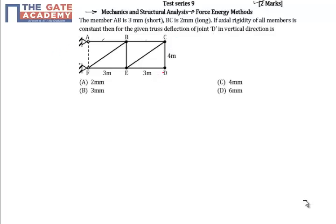Drawing the free body diagram here and applying 1 kN load at point D. This length is 4m, this would be 5, that is root of 3 square plus 4 square. This would be 3, this is 4, this is 5, this is 3m.